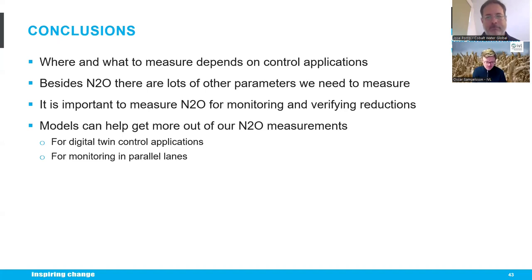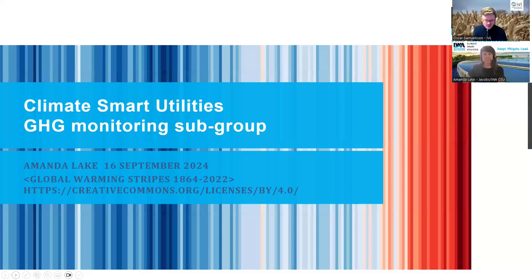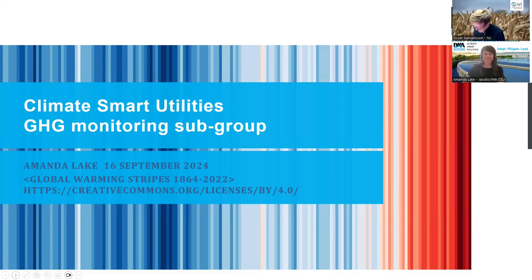In summary: where and what to measure depends on the control application; besides N2O, many other parameters need measuring; data quality must be high; it's important to measure N2O for monitoring and verifying reductions in any control situation; and models can help get more out of N2O measurements for digital twin applications or monitoring in parallel lanes. Oscar then introduces Amanda from Jacobs, head of Carbon and Circular Economy, to share information about resources and webinars on this topic.